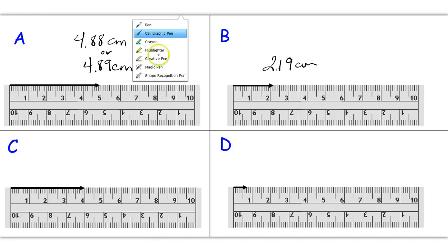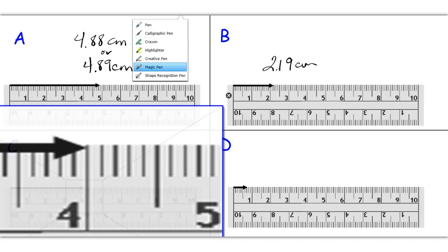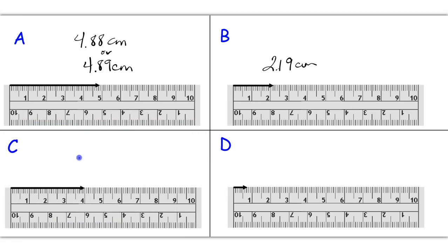Okay, letter C. Notice in letter C that the arrow appears to point at the 4, exactly on 4. You might call this 3.99, but if it is exactly on the 4, then you simply need to express this value with the minimum of two decimal places, so it wouldn't be just 4, it's 4.00 centimeters.